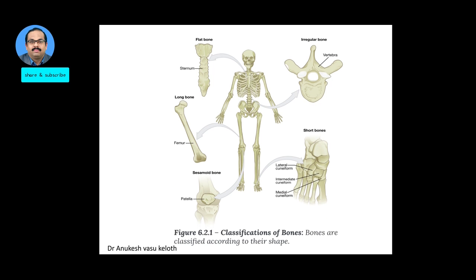Based on shape, you have four types: flat bones, irregular bones, long bones, and short bones. And then you have a fifth category known as the sesamoid bones.